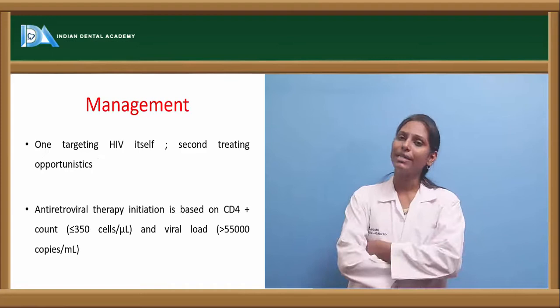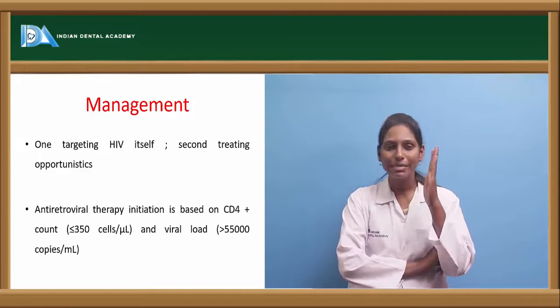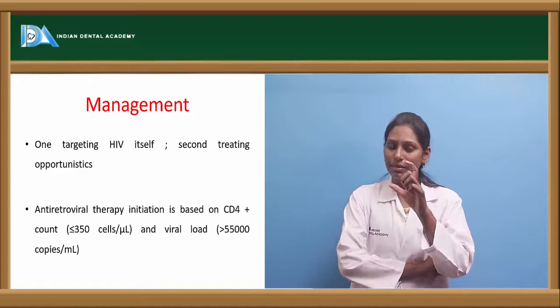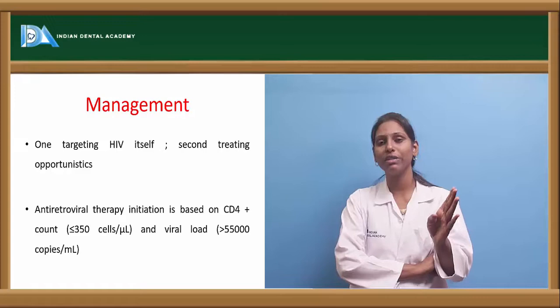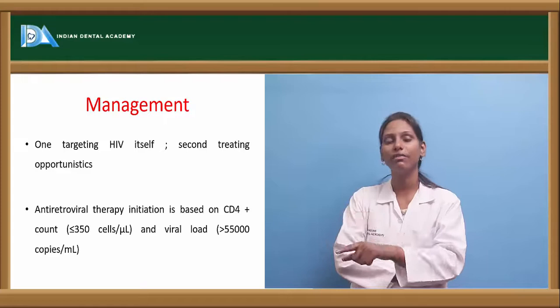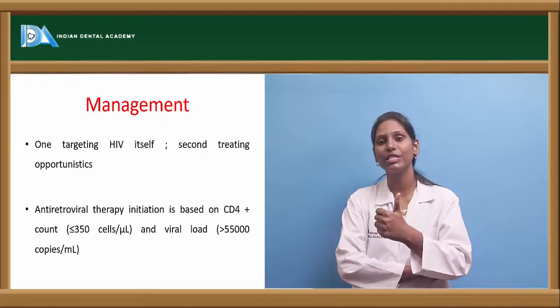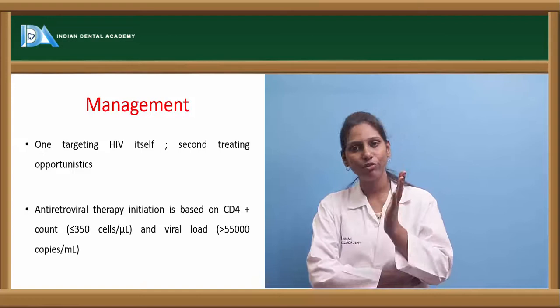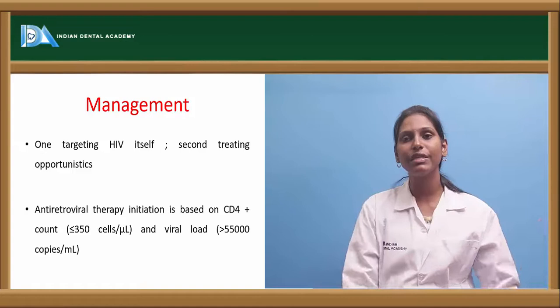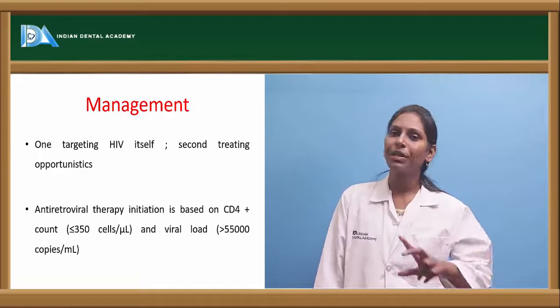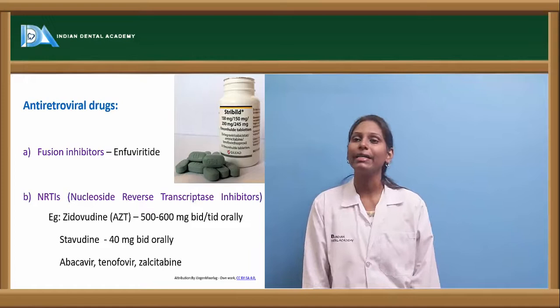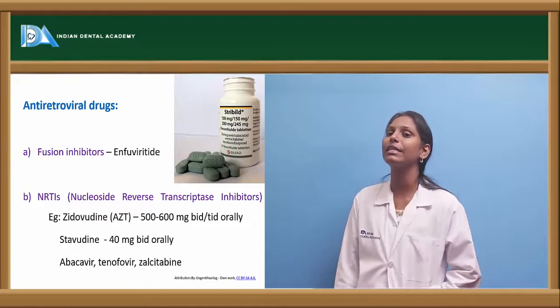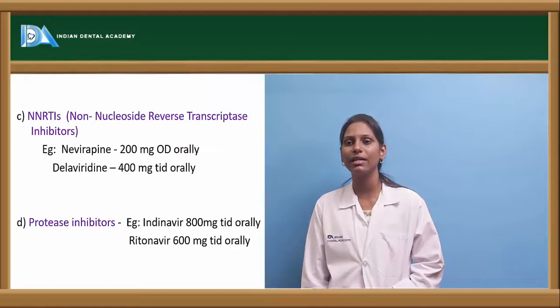Management of HIV targets two areas: directly treating HIV, and treating opportunistic infections. HIV infection is potentially fatal not just from the virus itself but from secondary opportunistic infections. Antiretroviral therapy (ART) is initiated when CD4 count falls below 350 cells/µL or when viral load exceeds 55,000 copies/µL — if either criterion is met, ART can be started. Antiretroviral drug classes include fusion inhibitors like enfuvirtide, nucleoside reverse transcriptase inhibitors (NRTIs) like zidovudine and stavudine.